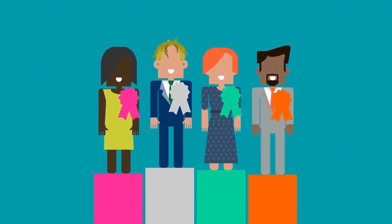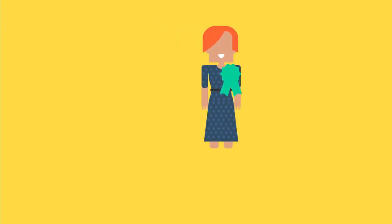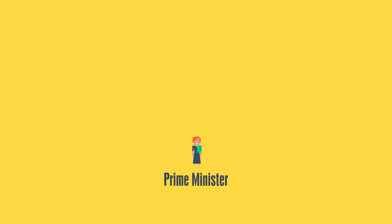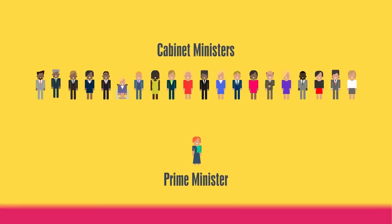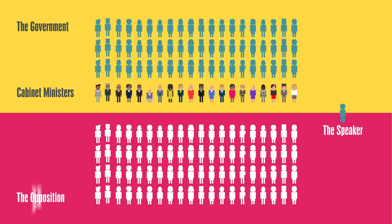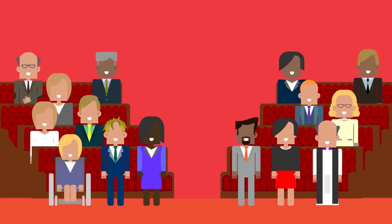The leader of the party that has the most MPs elected after a general election becomes the Prime Minister and heads up the government. They choose a cabinet made up of 20 senior ministers, who coordinate each government department's work. Parties not in power are called the opposition. MPs from the opposition and government question the government on policy and proposed laws. The Speaker keeps the House in order by chairing these debates.